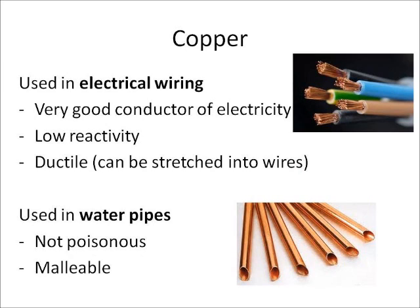Number two is copper. Copper is used in electrical wiring because it's an excellent conductor of electricity. It's also not very reactive and it's ductile, so it can be stretched into wires. It's also used for making water pipes because it's not poisonous and it's malleable — it can be bent into shape.